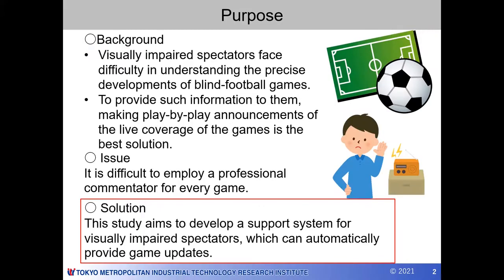In the case of blind football, several spectators are visually impaired. However, visually impaired spectators face difficulty in understanding the precise developments of these games. To provide such information to them, making play-by-play announcements of the live coverage of the games is the best solution.